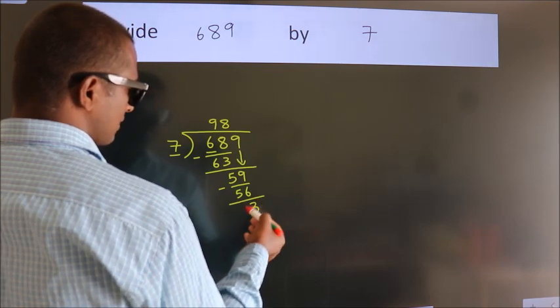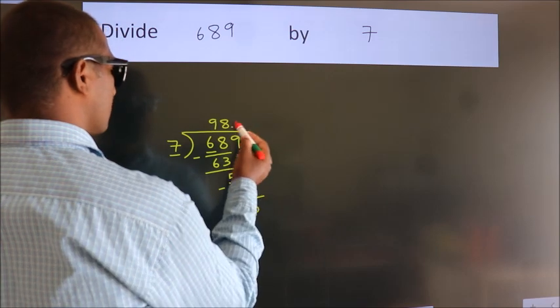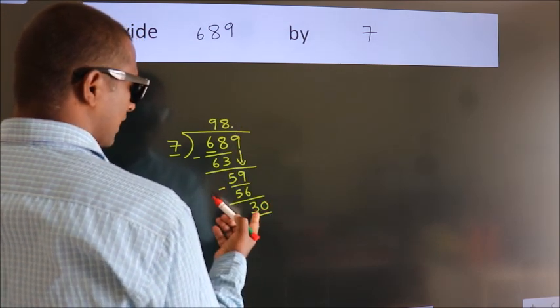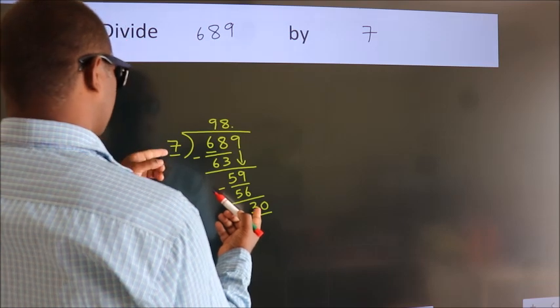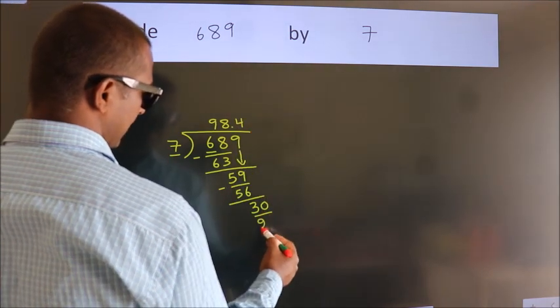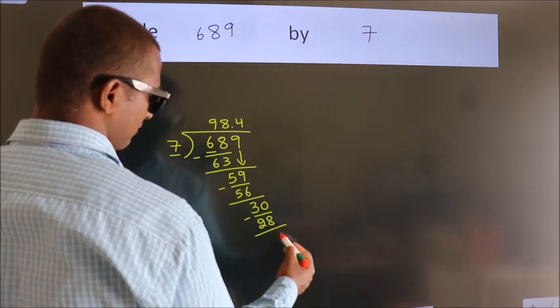After this, there are no more numbers to bring down, so what we do is put a dot and take 0, giving us 30. A number close to 30 in the 7 table is 7 times 4, which is 28. Now we subtract and get 2.